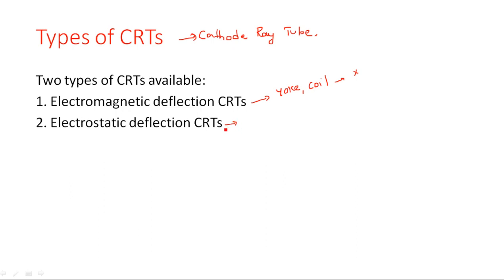Electrostatic deflection CRTs are another type where the electric field is used to deflect the electron beam. Some electron voltages are applied to deflect the electron beam on the CRO screen — that is why it is called electrostatic deflection CRT.